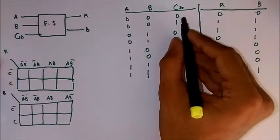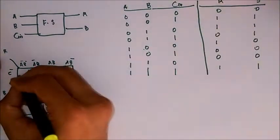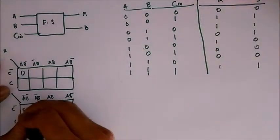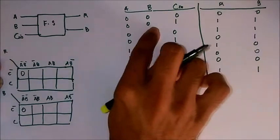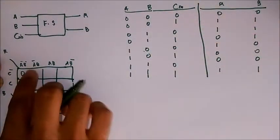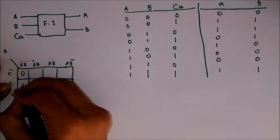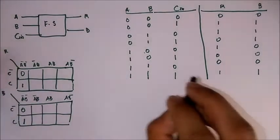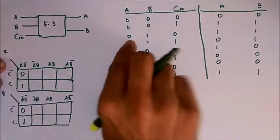So when we input the values, that is 0 0 0, A bar B bar C bar is zero, and for borrow it's also zero. And therefore A bar B bar C, both are one. A bar B bar C, both are one.